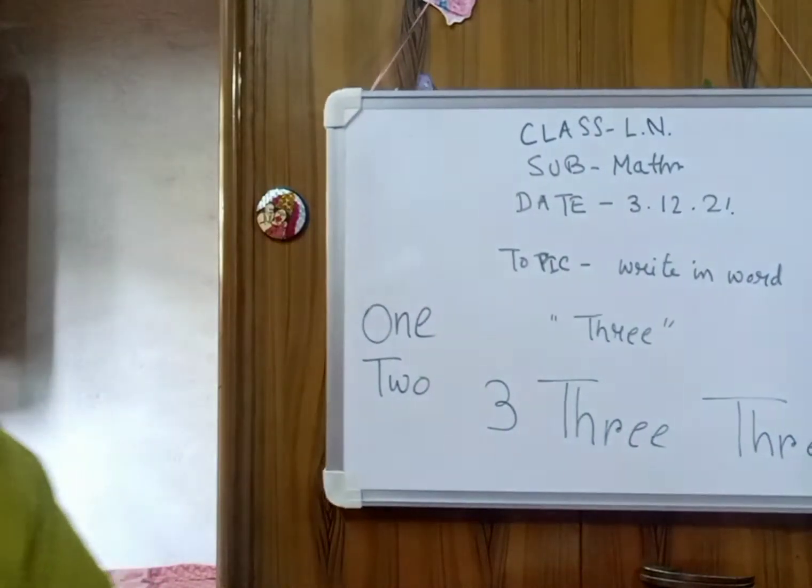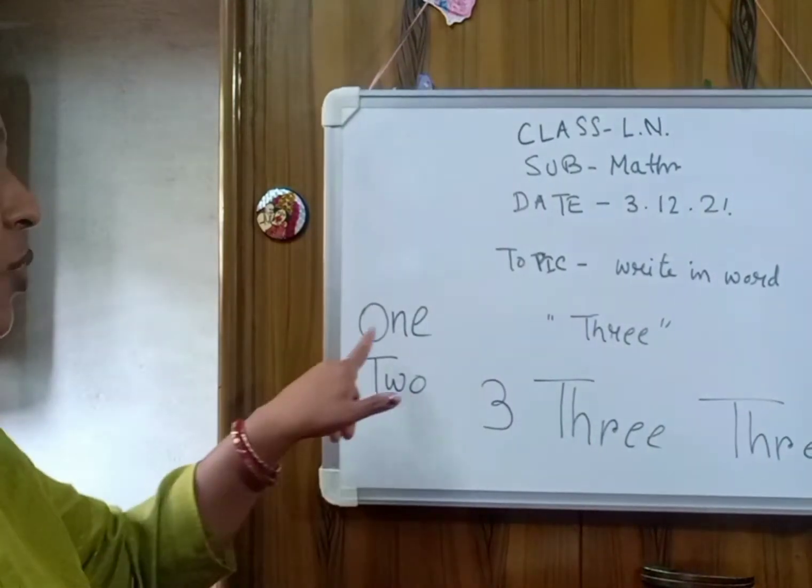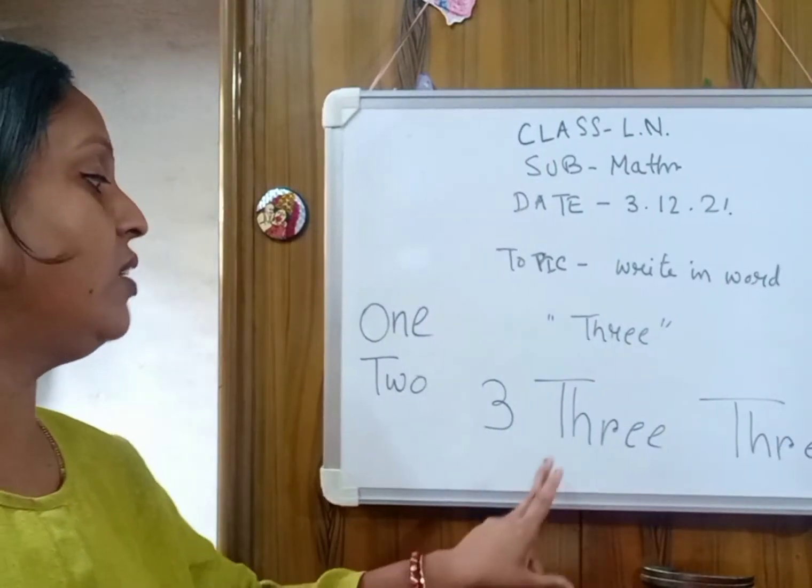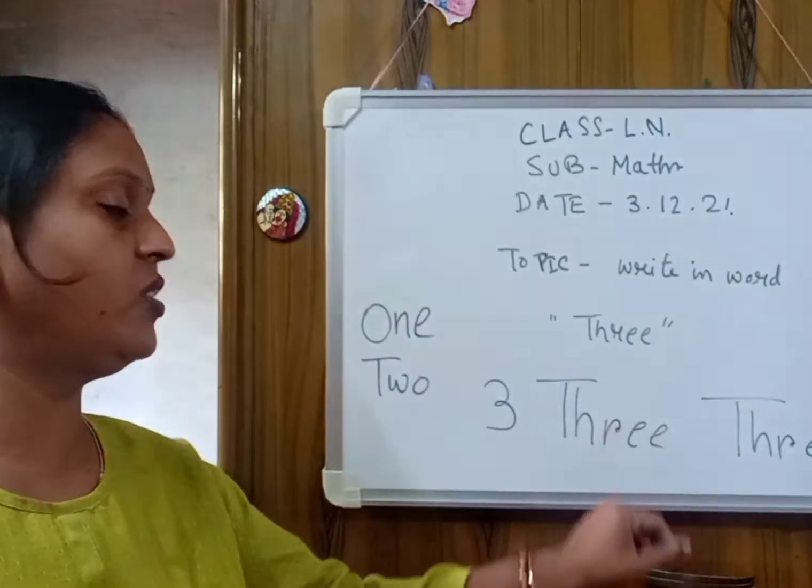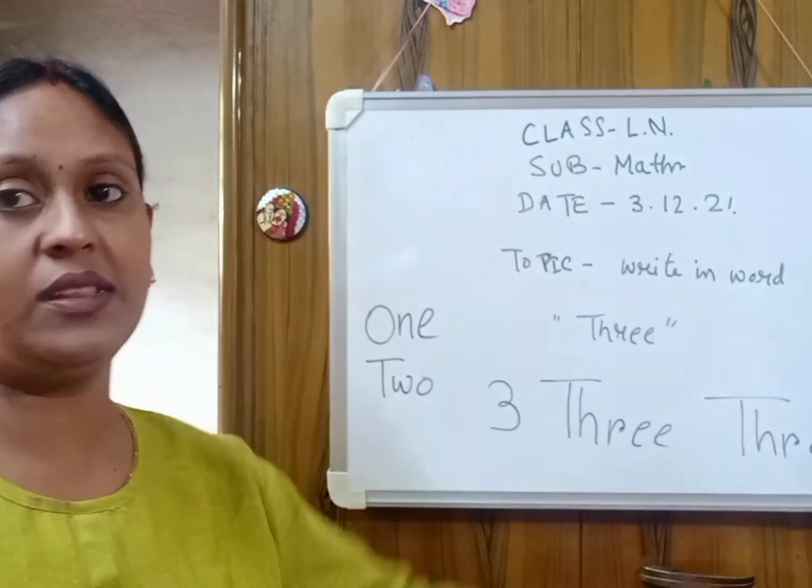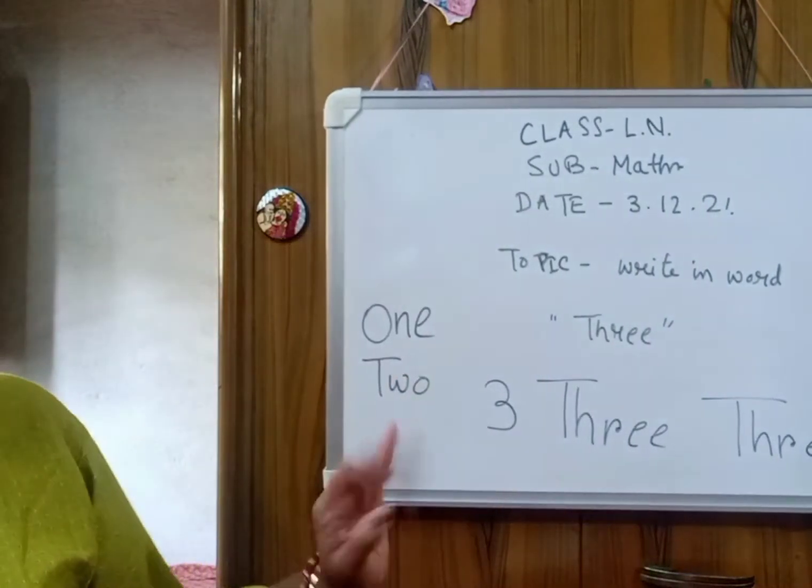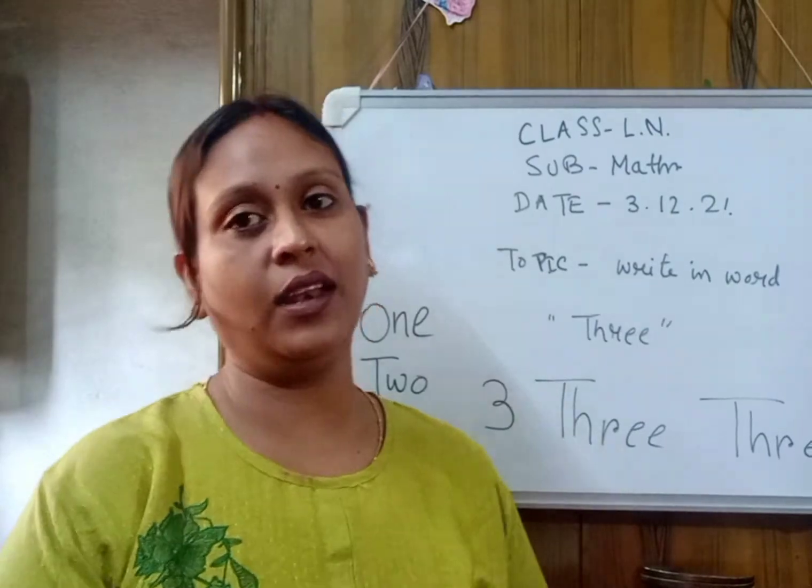T-H-R-W-E-3. So O-N-E-1, T-W-O-2. And today we will learn the spelling of number 3. T-H-R-W-E-3. So children, this is your copy work. So you should take out your copy and we will write in our copy.